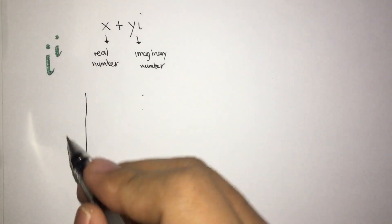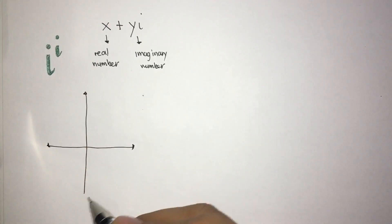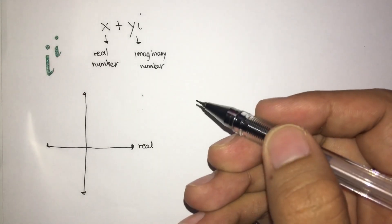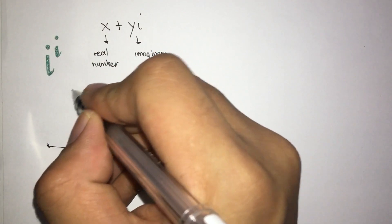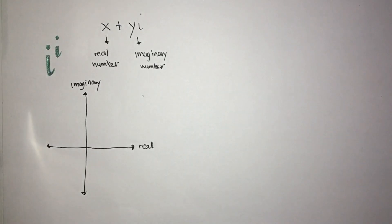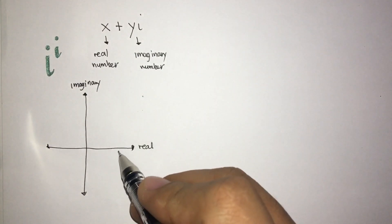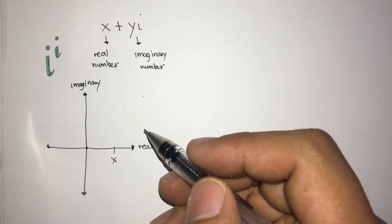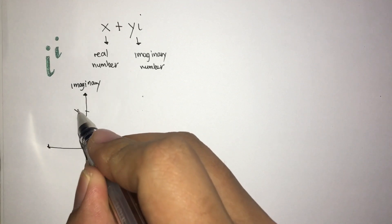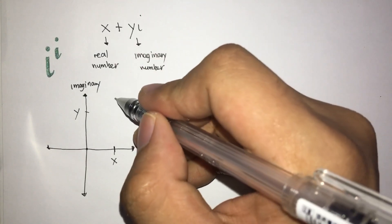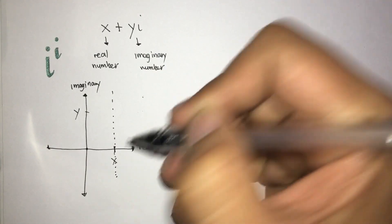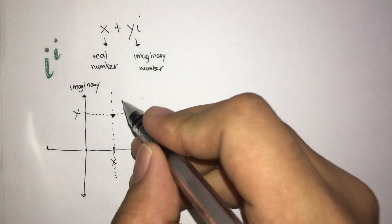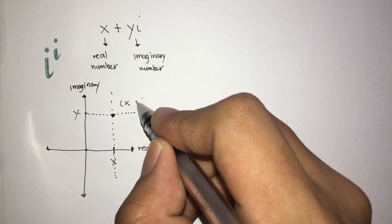So if we try to plot this expression on the complex number plane, where the horizontal axis represents the real numbers and the imaginary number is represented on the vertical axis, we can plot x units from the origin on the real number line and y units from the origin on the imaginary number line. Drawing vertical and horizontal lines and plotting their intersection, we can represent this point as x plus yi.